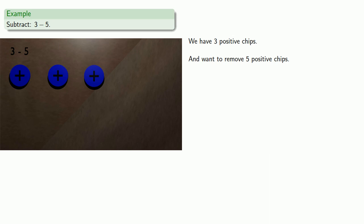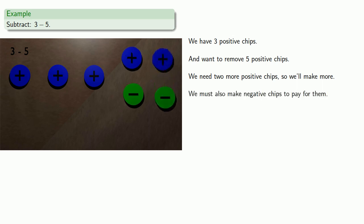Since we want to be able to remove 5 positive chips, we need 2 more positive chips. So we'll make more at the cost of making negative chips as well. And now we're ready to remove 5 positive chips. And that leaves us with 2 negative chips.